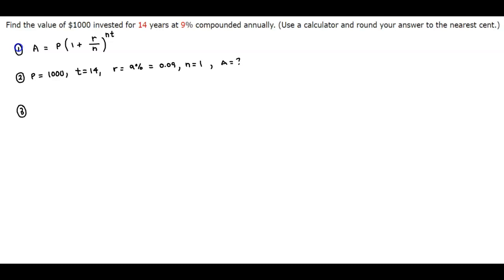So let's go ahead and plug in our information. We have A which is equal to 1,000 times 1 plus 0.09 divided by n, which is 1, to the power of 1 times 14.